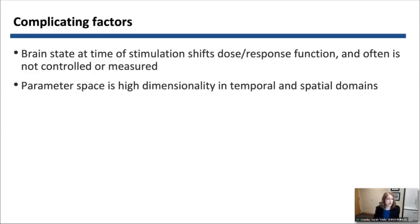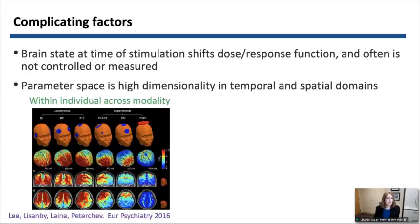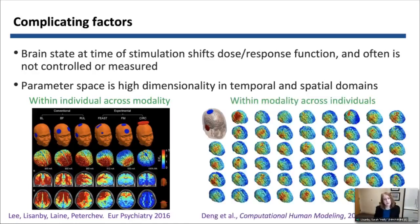Another complicating factor is that the parameter space has high dimensionality, both in the temporal and spatial domains. For example, here's e-field modeling of a single individual across modalities — you can see that as we shift the location of the electrodes, there's a big change in the electric field induced in the brain. But within modality, there's also tremendous variability across individuals: the same delivered dose results in multiple different strengths and distributions of electric field across different heads.